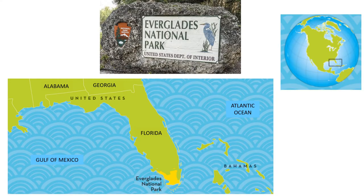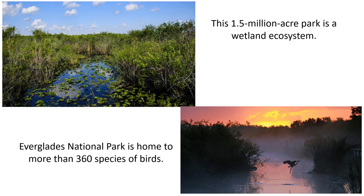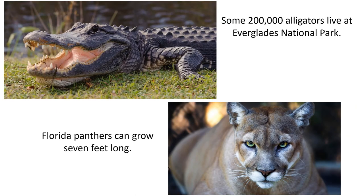We are now traveling south to the tip of Florida to Everglades National Park. It is an important habitat for numerous rare and endangered species — one of those is the manatee. This one-and-a-half-million-acre park is a wetland ecosystem. It is also home to more than 360 species of birds. The Florida panther calls Everglades its home and can grow seven feet long. Some 200,000 alligators live at Everglades National Park.